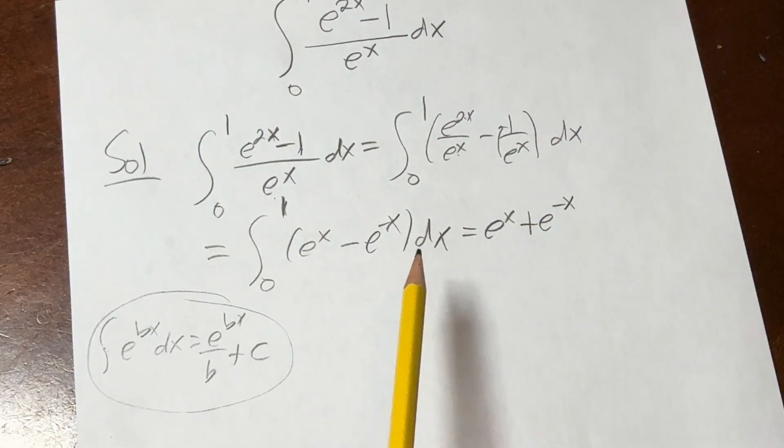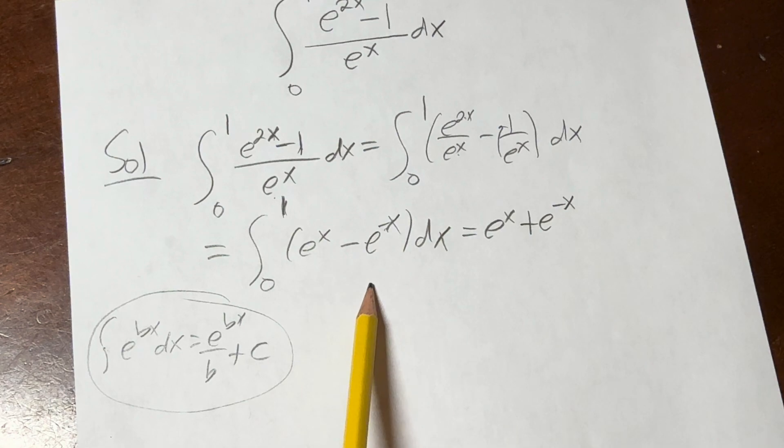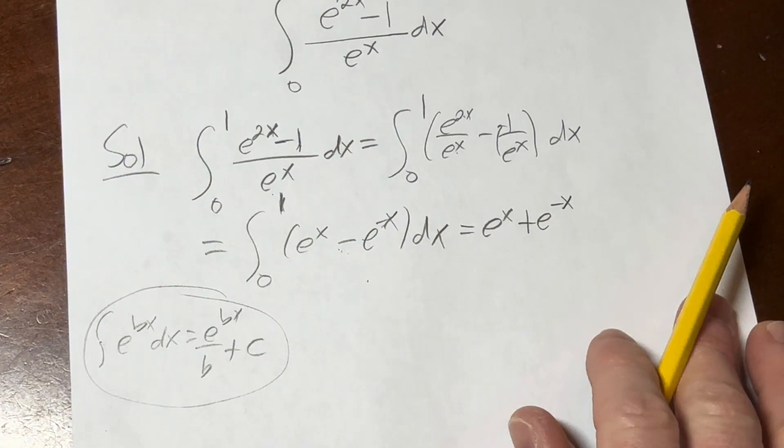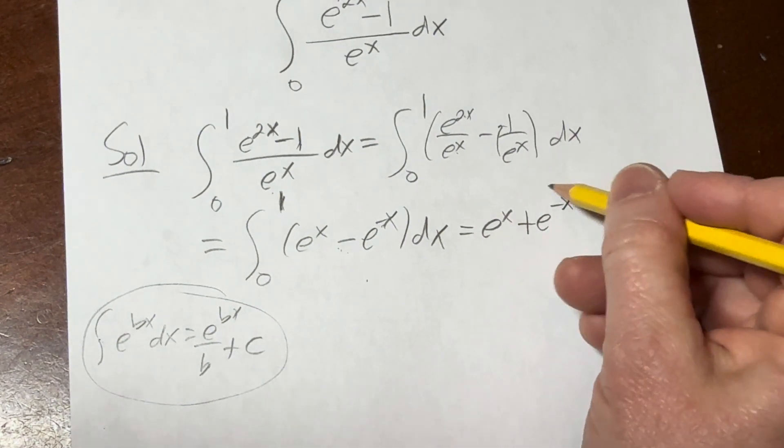You might say, what? Where the heck did the plus come from? Well, we're dividing by negative 1. There's already a negative there, so it turns into a plus, and we're going from 0 to 1.